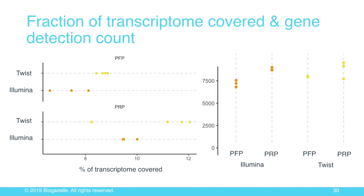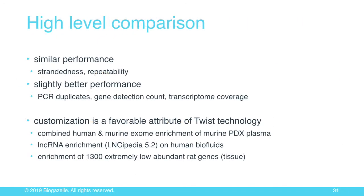When we look at transcriptome depth and gene detection, we have about 10% more genes with the Twist workflow, and about 4–5% deeper sequencing into the transcriptome — which translates to roughly 50% more depth because the enrichment is more efficient and sensitive. We see similar performance for strandedness and repeatability, but definitely better performance in PCR duplication levels, gene detection count, and transcriptome depth covered.